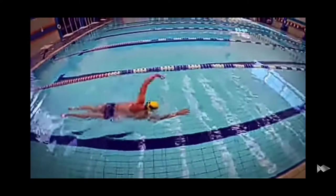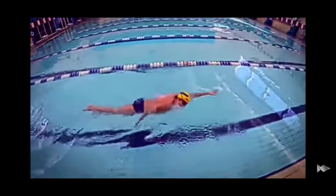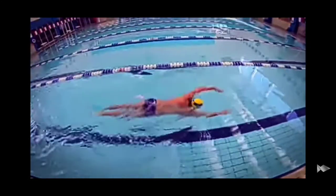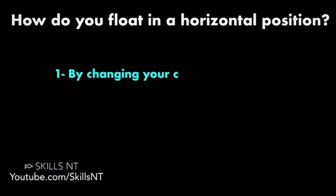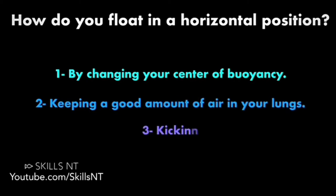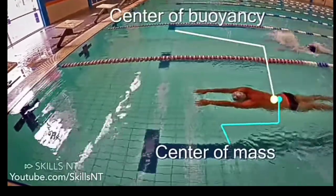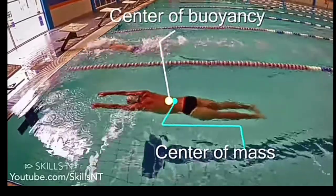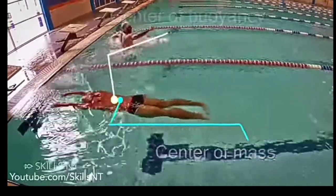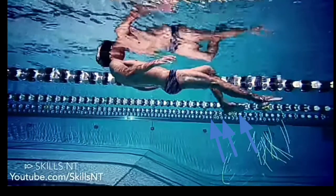First, buoyancy — meaning the ability to float. Understanding the basics of swimming is a key element to help you swim, whether you are a beginner or an experienced swimmer. How do you float in a horizontal position? By changing your center of buoyancy, keeping a good amount of air in your lungs, and by kicking. If you have your arms up, the center of buoyancy gets closer to your belly. And by kicking, you create an upward force that makes the water push you up.